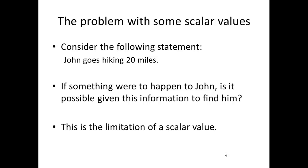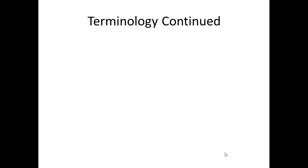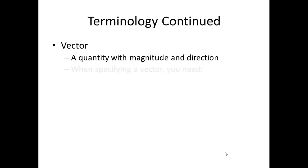And this is the limitation of scalar values. Sometimes it's enough, but in most cases it's not. So the second term is a vector. And a vector is a quantity with magnitude and direction. Now again, the magnitude is the amount and the size plus the unit, just like it was with a scalar.